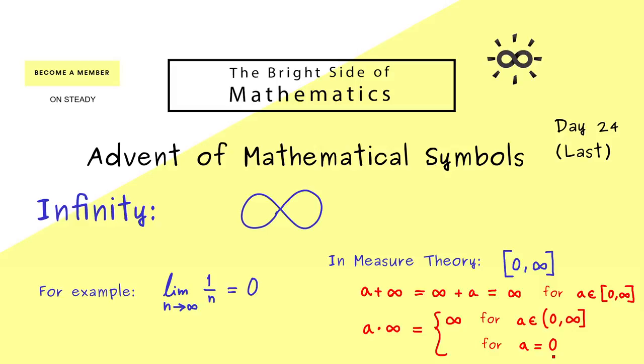However here one question remains. What to do with 0 times infinity. Usually for example when you deal with limits this expression is not well defined. But in measure theory it makes sense to define it. Indeed there 0 times infinity should be 0.